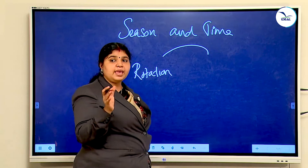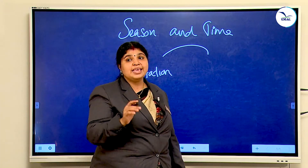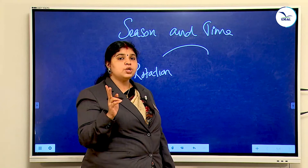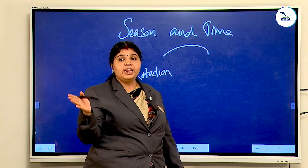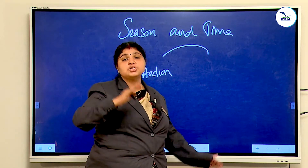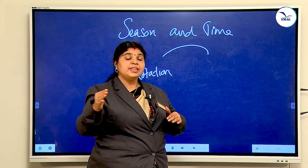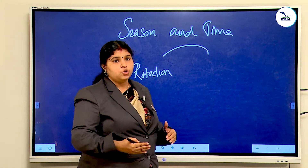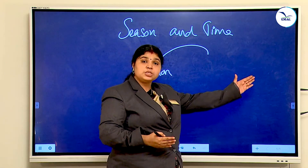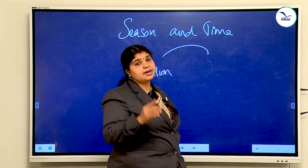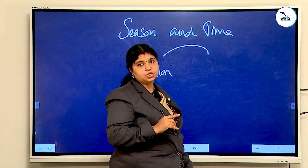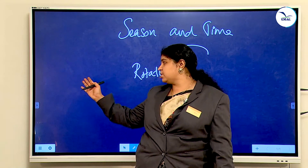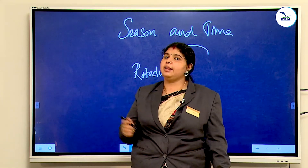Can you say which state in India sees the sun first and the last? The earth rotates from west to east, so the east sees the sun first. Arunachal Pradesh, the easternmost state, sees the sun first, and Gujarat, the westernmost state, sees the sun last.